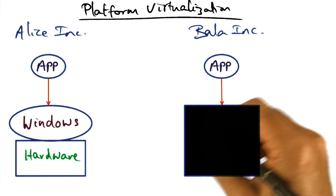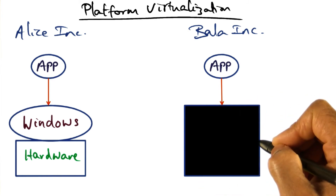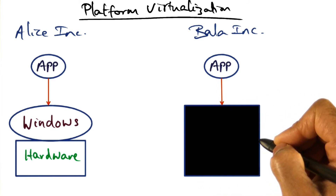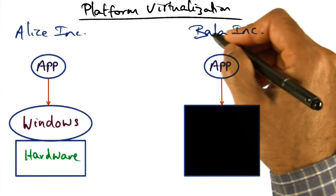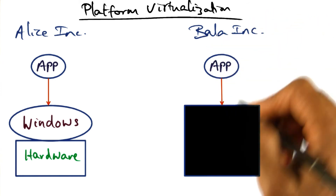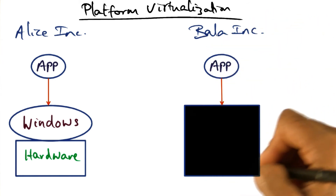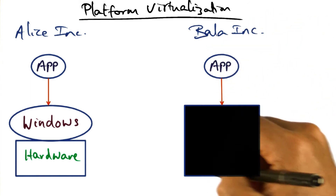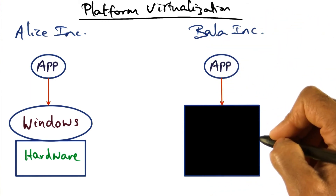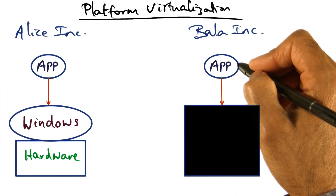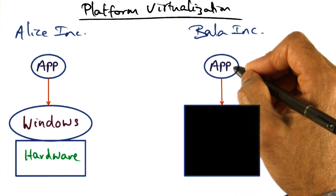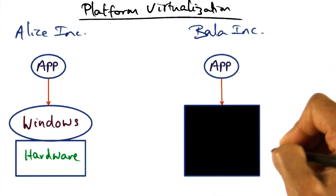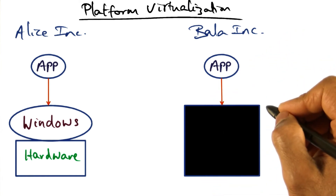Now in this diagram, what I've shown you is a black box to represent the virtual platform. As far as Bala Inc. is concerned, they don't really care what goes on inside this black box. All they want is to make sure that the apps they want to run can run on top of this virtual platform.